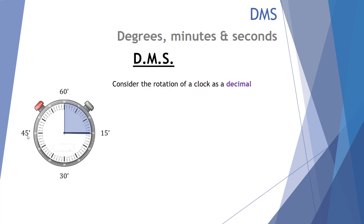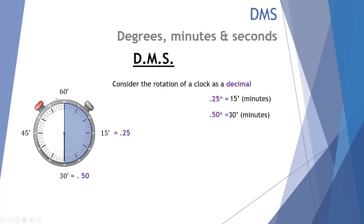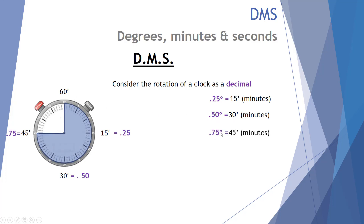A full rotation is 60 minutes, making up the hour. Now let's look at that as a decimal. A quarter rotation can be called 0.25. So 0.25 of a degree in DMS terms is exactly 15 minutes — it's a quarter of a degree. Half the way around, 0.5, is represented by 30 minutes. So half a degree is 30 minutes. Three quarters of a degree is 0.75, represented by 45 minutes. And a full degree represents 60 minutes.